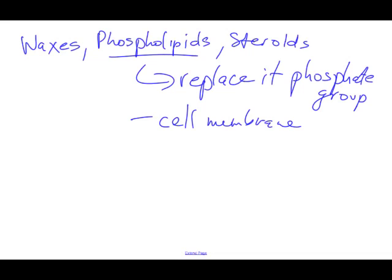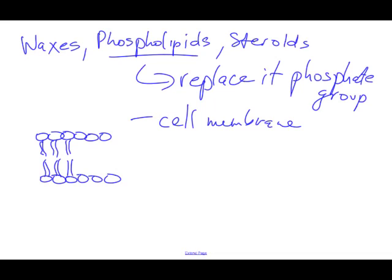Phospholipids are really important when looking at the cell membrane. When looking at the cell membrane and the phospholipid bilayer, one end — the outer end of the membrane — has these hydrophilic heads, with the fatty acids spiraling inwards. This is our arrangement of our cell membrane, with the outside and the inside.